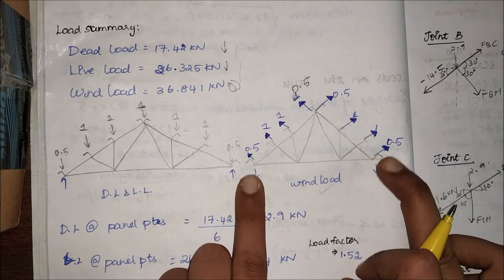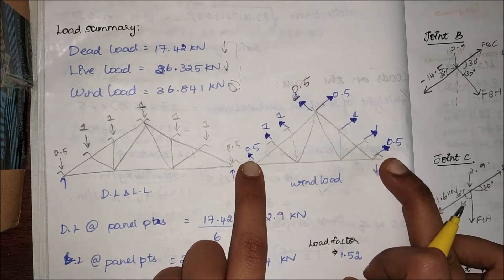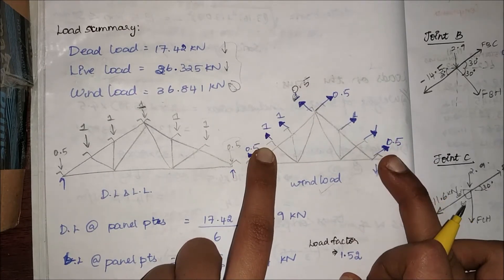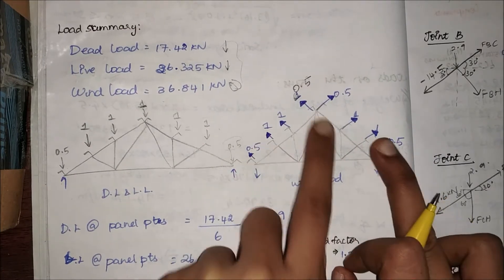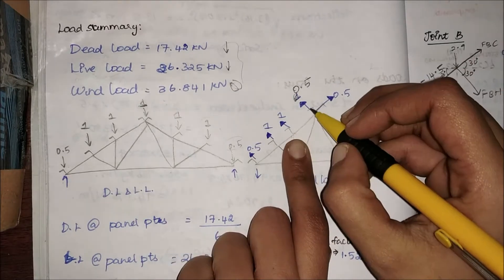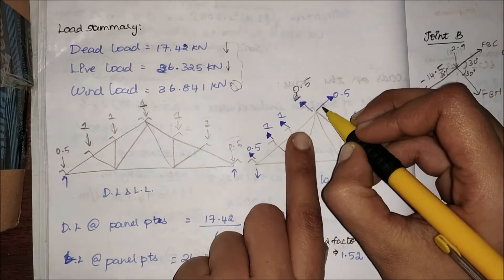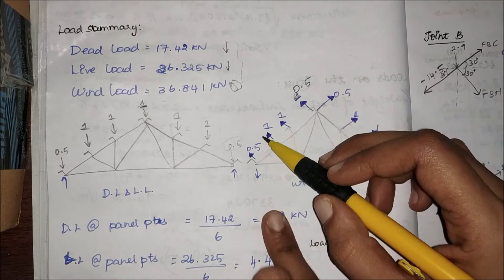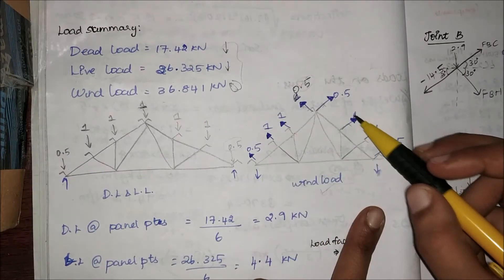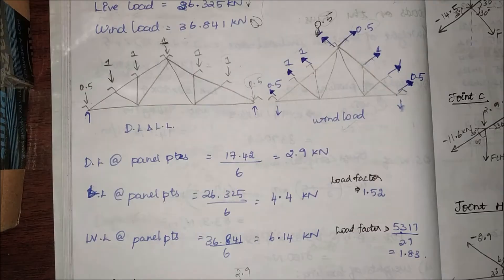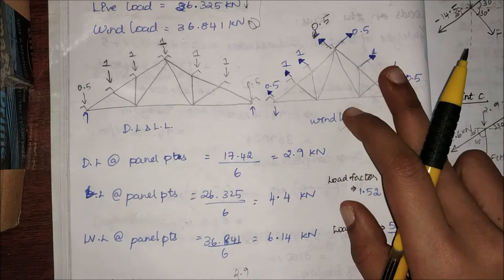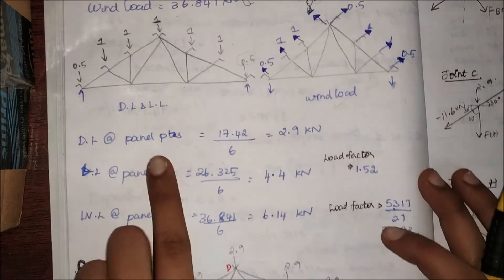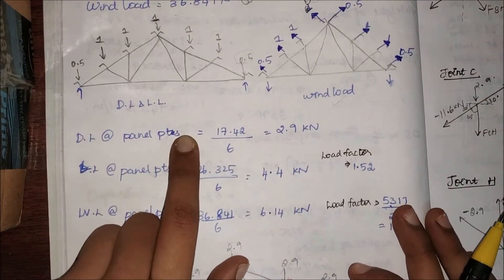When you look at wind load, the end panel points will also have half of that of the other panel points. At this point, since they are in the opposite direction, this end is 0.5 and the other end is also 0.5, whereas the other panel points have 1 and 1. This is just an example — we will look into detail about them.